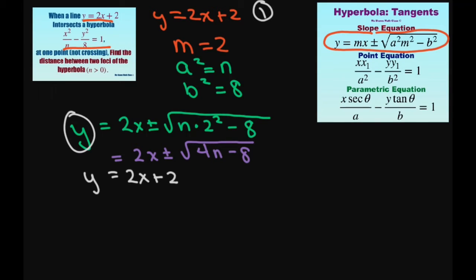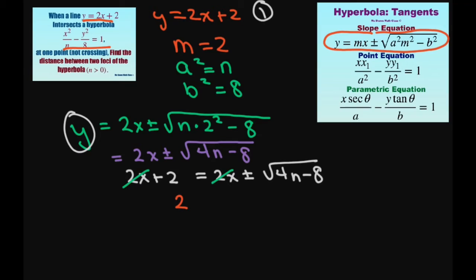So we're going to set this equal to 2x plus or minus square root of 4n minus 8. Setting y equals y, the 2x cancels, and therefore we're going to have 2 equals plus or minus square root of 4n minus 8.